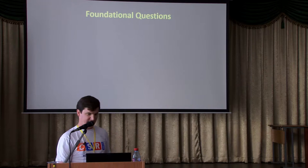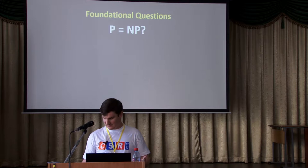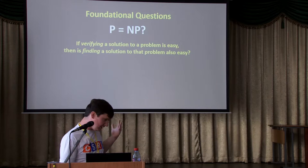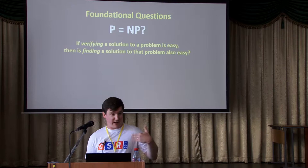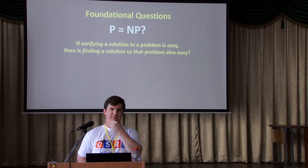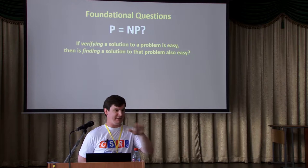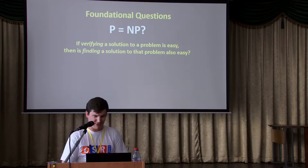When you think about the intersection of algorithms and complexity, you naturally come across foundational questions. The most popular one is, of course, the P equals NP question, which asks: if verifying a solution to a problem is easy, then is finding a solution also easy? Who here has seen P and NP? Okay, practically everyone.